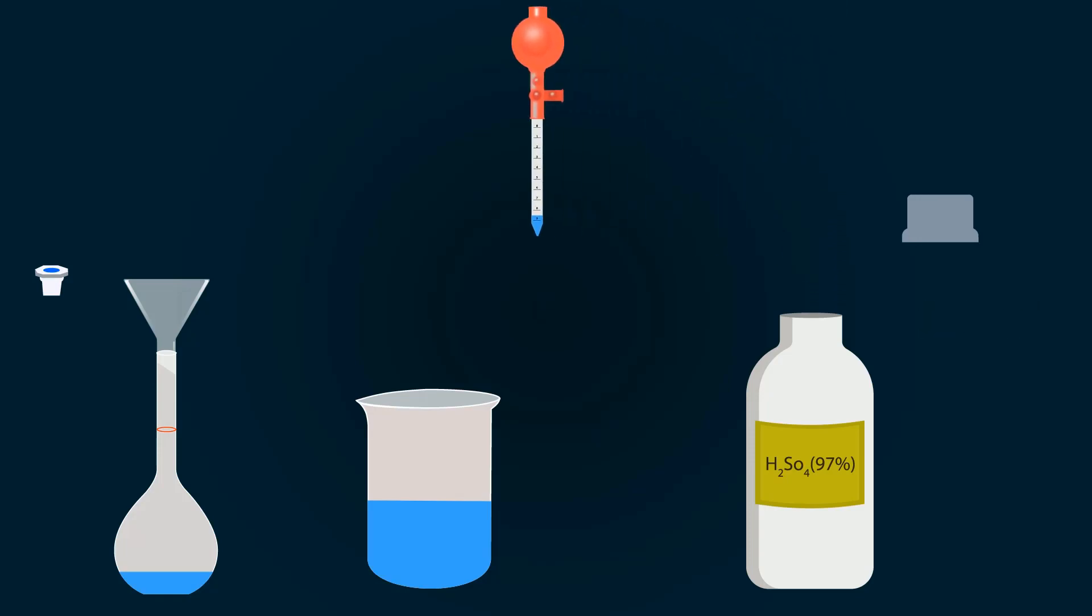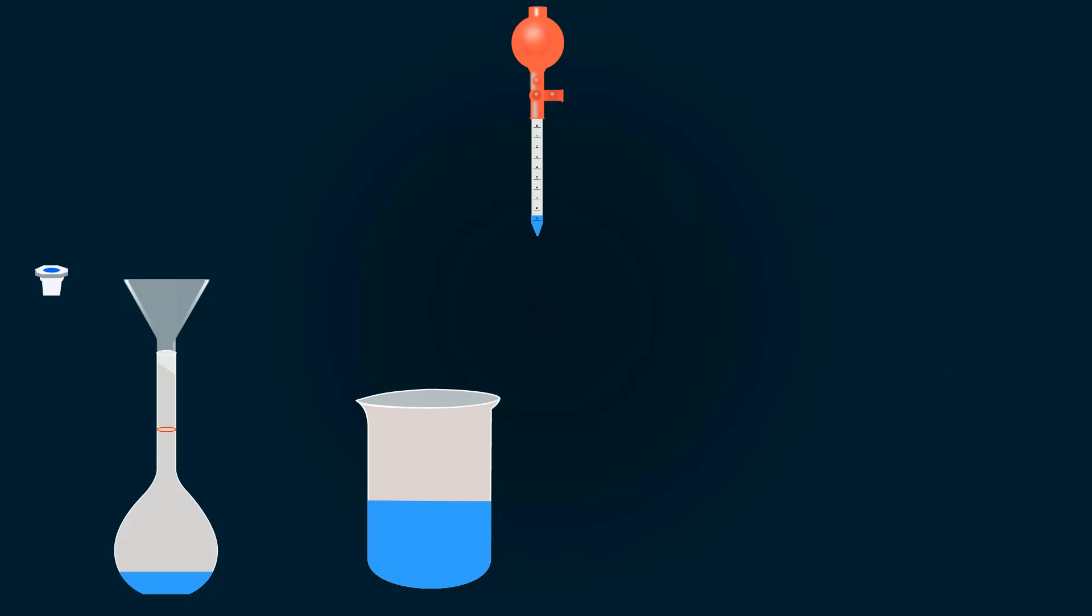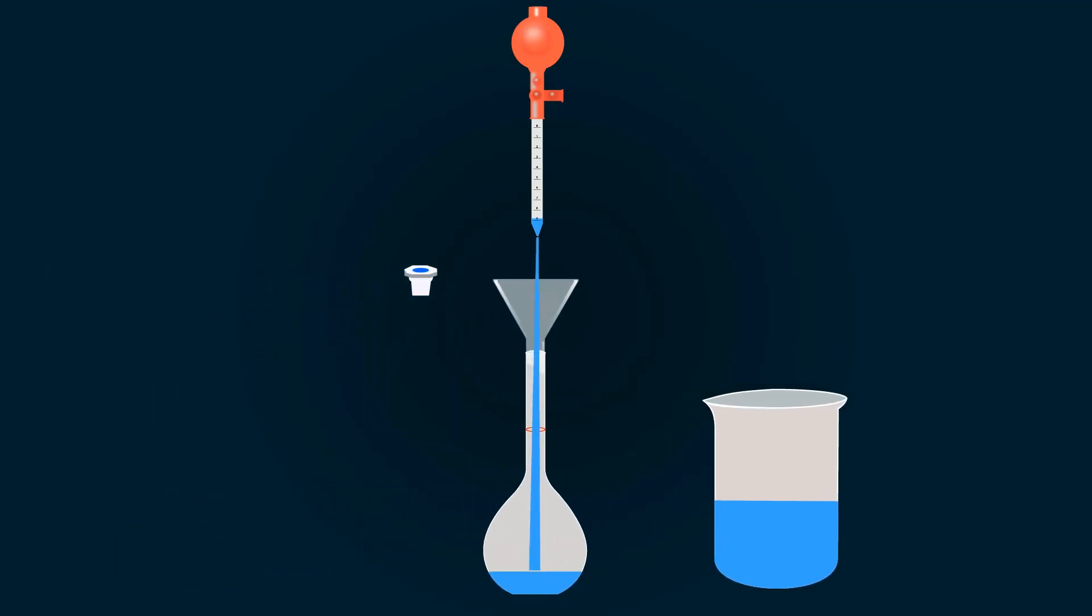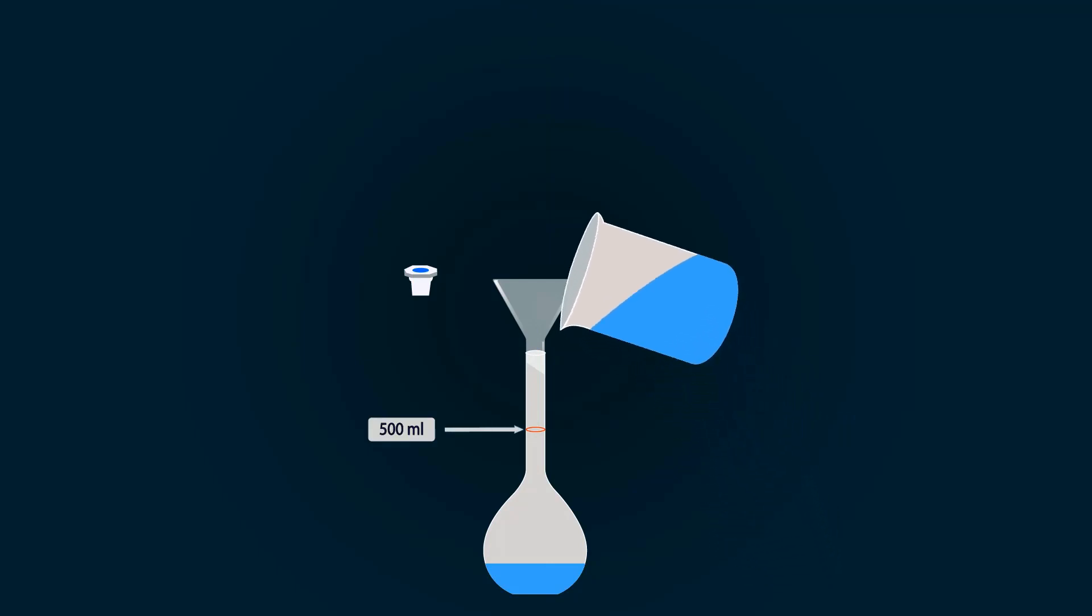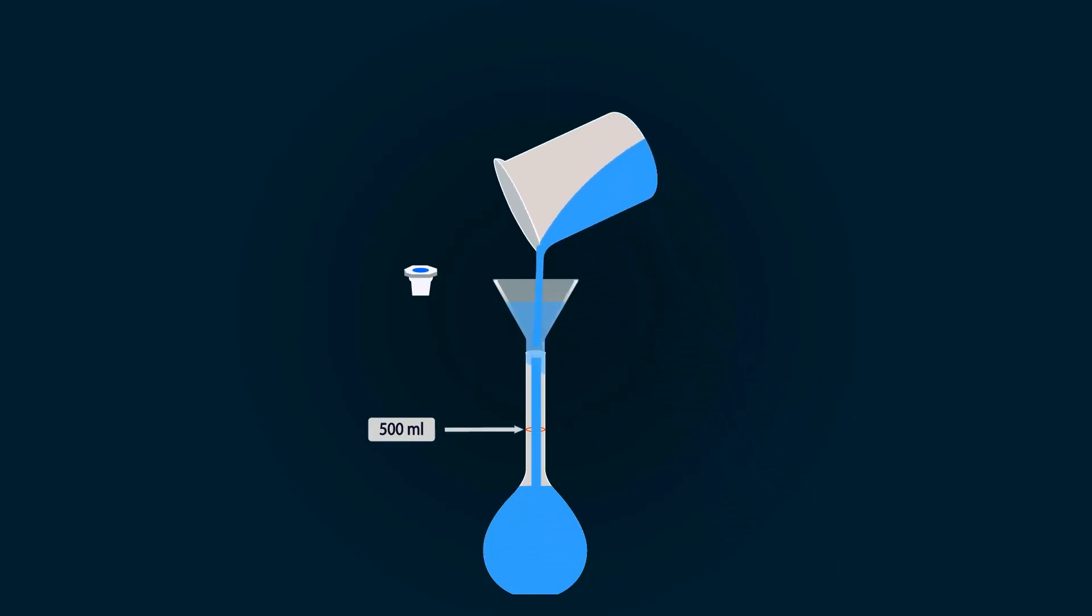Add this 0.14ml into the measuring flask. As you can see, the red point indicates 500ml. Now put the distilled water into it up to the point and you have successfully prepared 0.01 normal solution of 97% H2SO4.